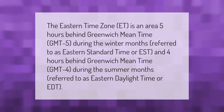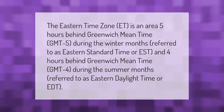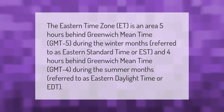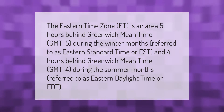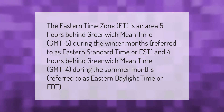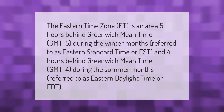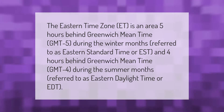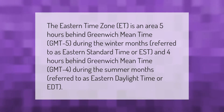The Eastern Time Zone (ET) is an area five hours behind Greenwich Mean Time (GMT-5) during the winter months, referred to as Eastern Standard Time or EST, and four hours behind Greenwich Mean Time (GMT-4) during the summer months, referred to as Eastern Daylight Time or EDT.